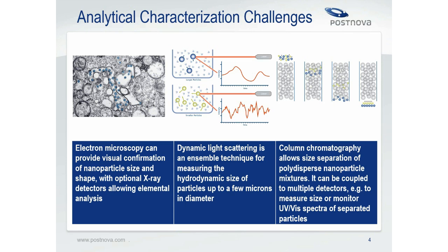However, larger particles scatter light much more intensely than smaller particles. So for polydispersed samples — for example, when virus or antibody aggregates are present — DLS results may not be indicative of the real size distribution. To combat this, separation techniques can be used. Size-exclusion chromatography uses its stationary phase to separate samples by size. Unfortunately, many biopharmaceutical products, such as virus aggregates and liposomes, may be larger than the maximum size effectively separated by SEC. One technique that is complementary to all these techniques is field flow fractionation, or FFF.